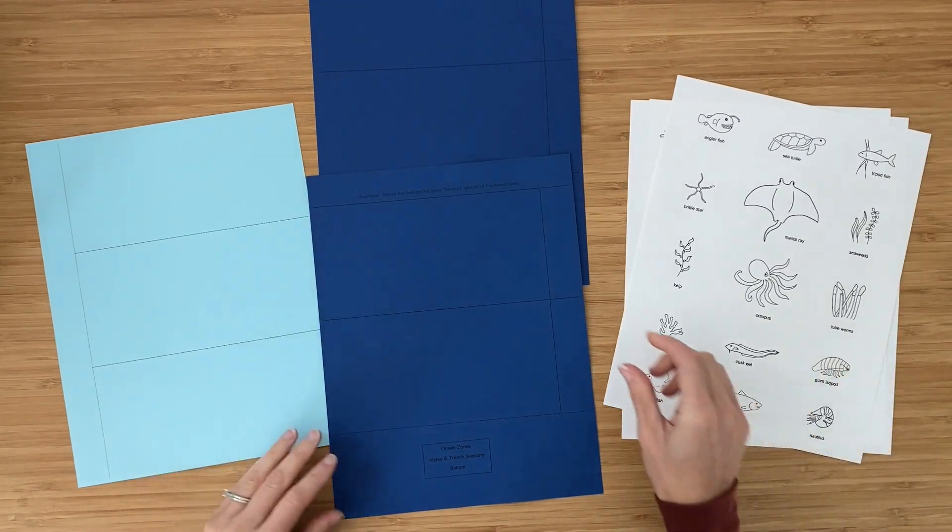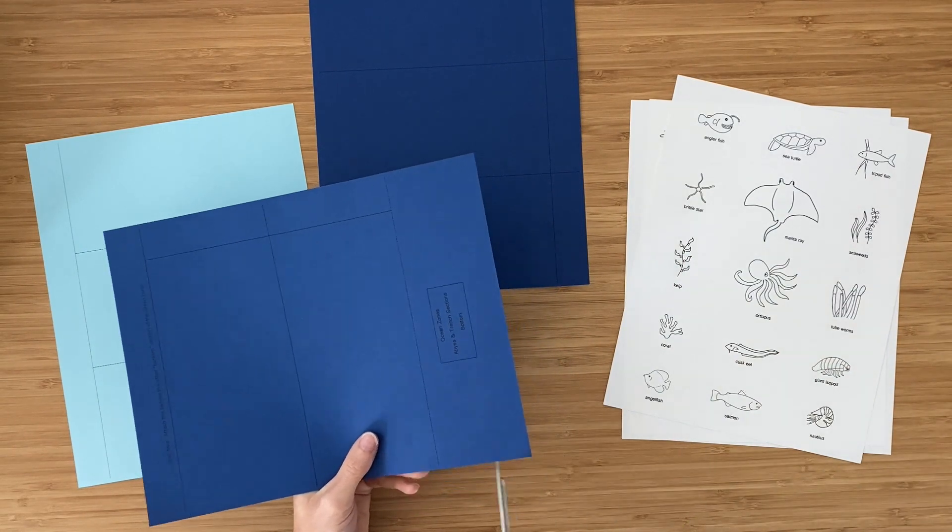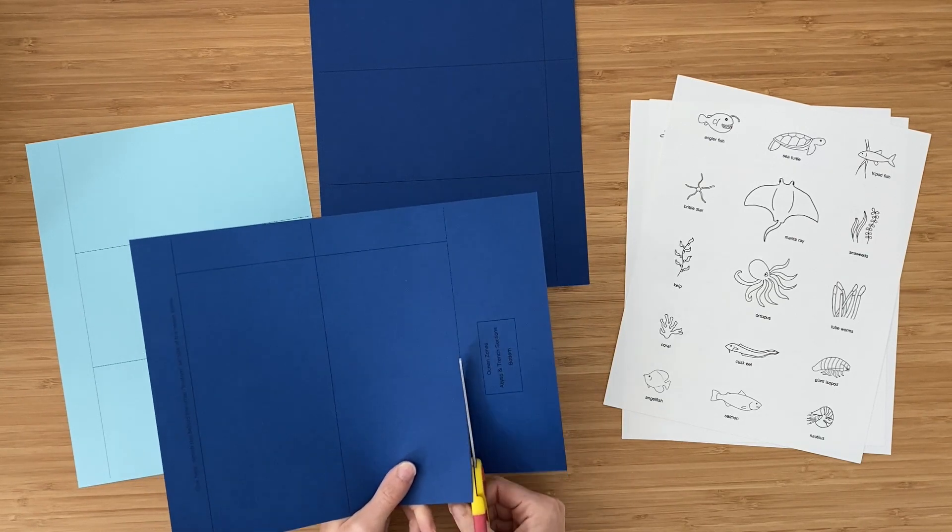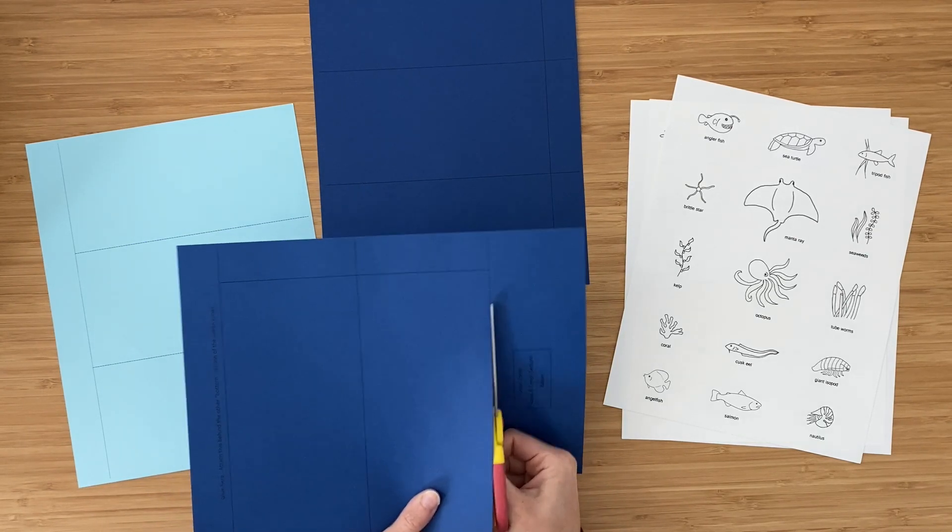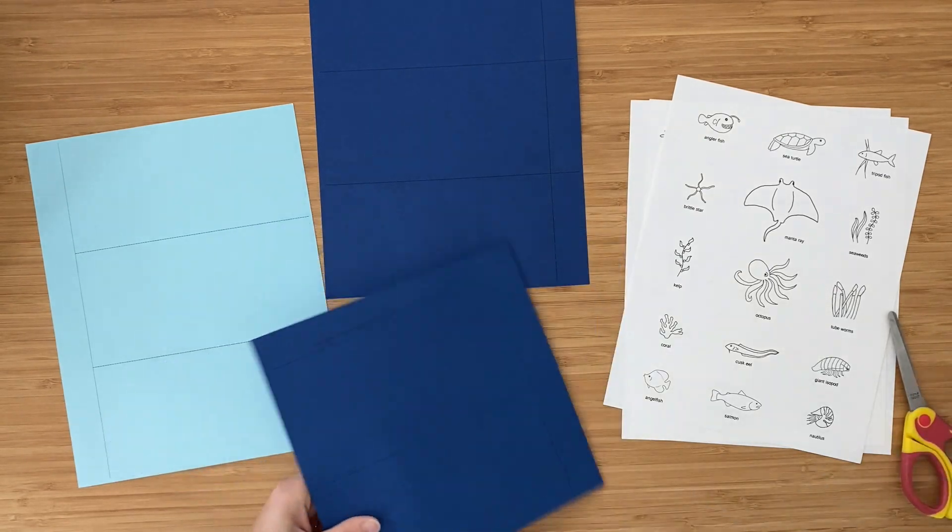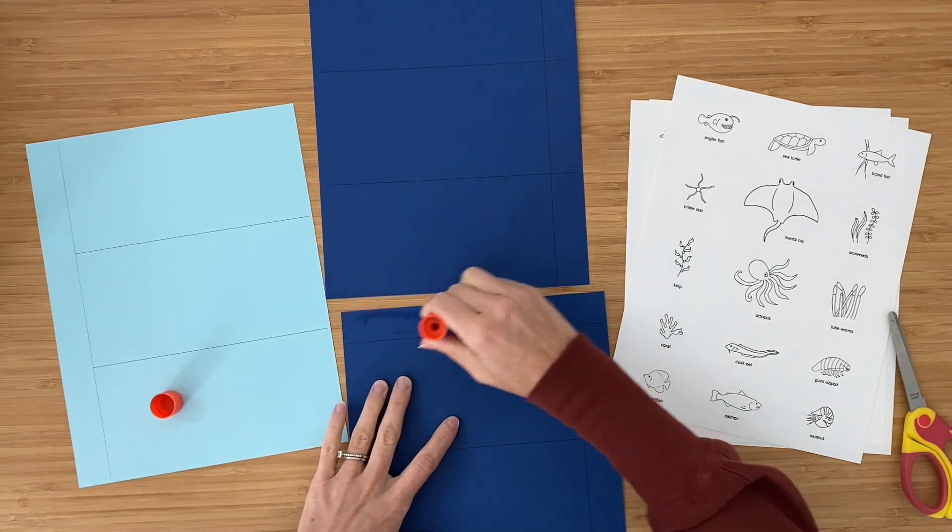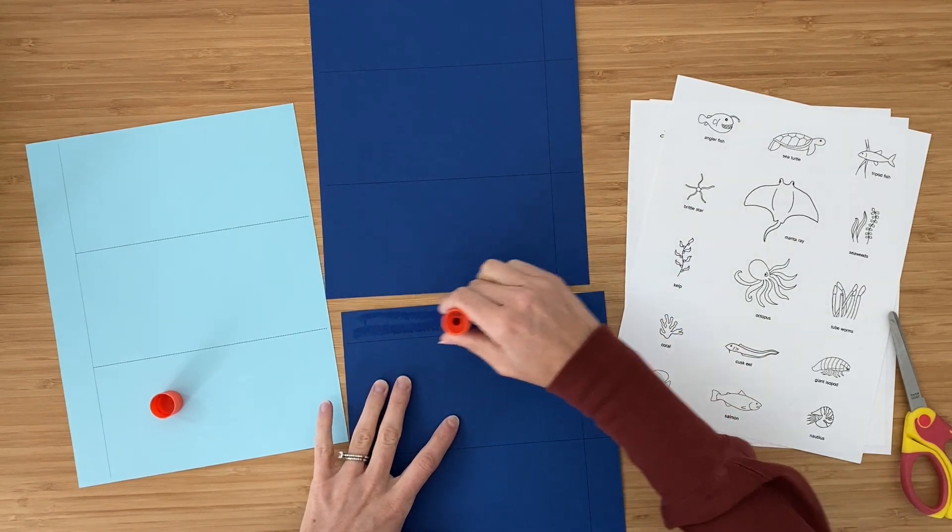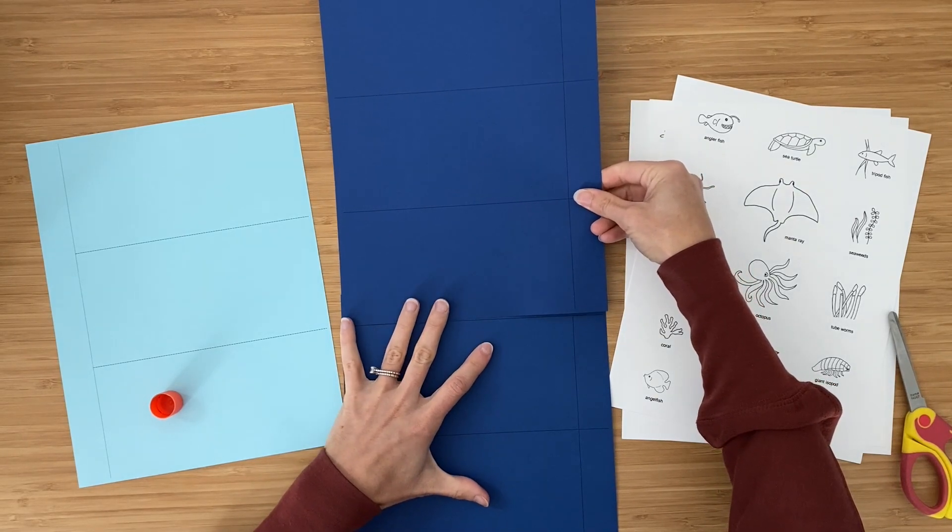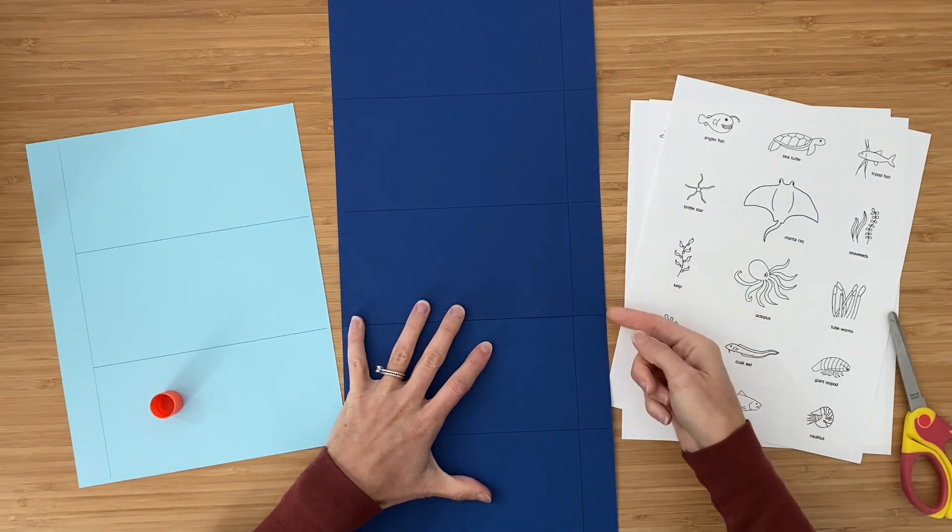You'll have two pieces for the bottom ocean zones page. The bottom of the bottom has a black dashed line for you to cut on, and then it also has a section right up here that says 'glue here'. You'll put that on the bottom of your other ocean zones bottom page and just try to line up these lines and the edges.